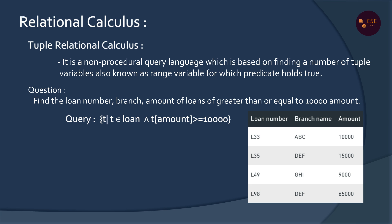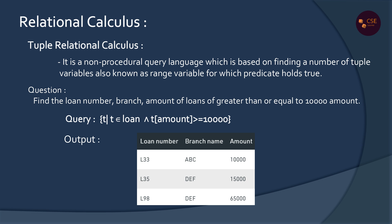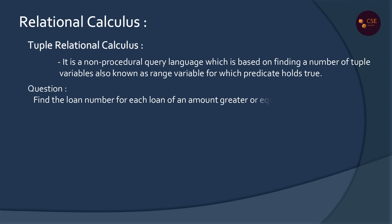If you run this query, the output shows the Loan table with Loan Number, Branch Name, and Amount — three columns displayed. The condition filters rows where Amount is greater than or equal to 10,000, and all those columns are displayed in the result.